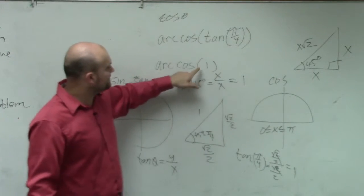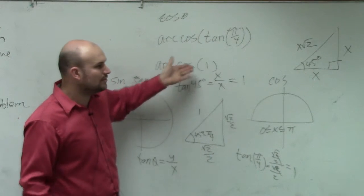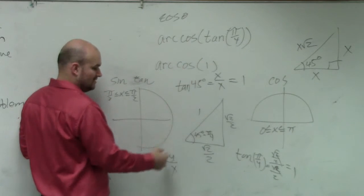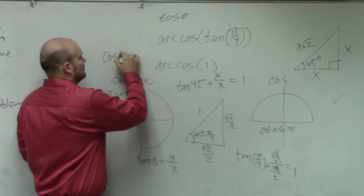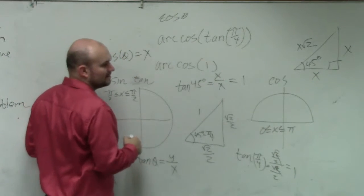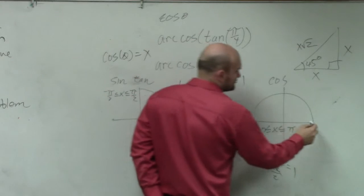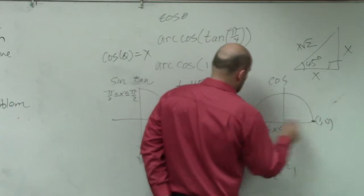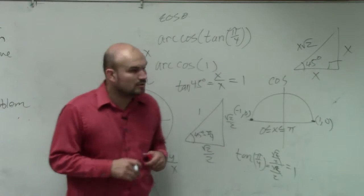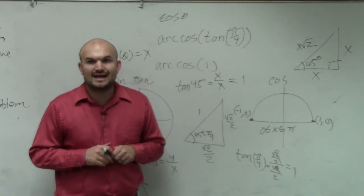So then we have cosine of 1. When is cosine equal to 1? Remember, cosine, again, cosine represents the x-coordinate, right? Cosine of an angle is equal to the x-coordinate. Well, think about it, ladies and gentlemen. When is cosine going to equal 1? What angle?